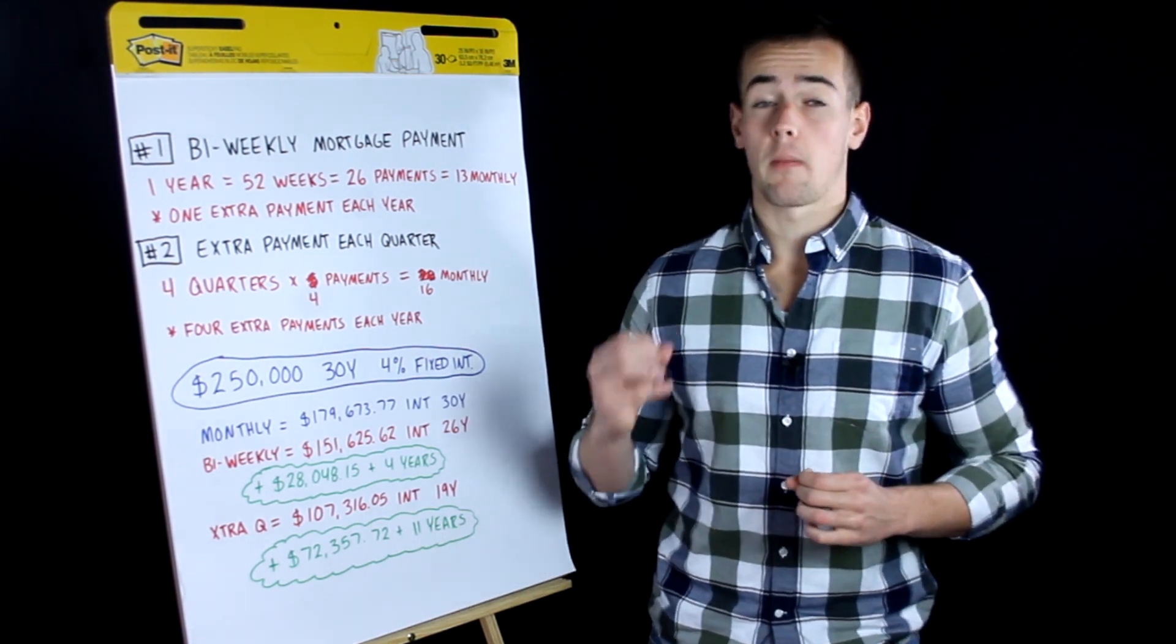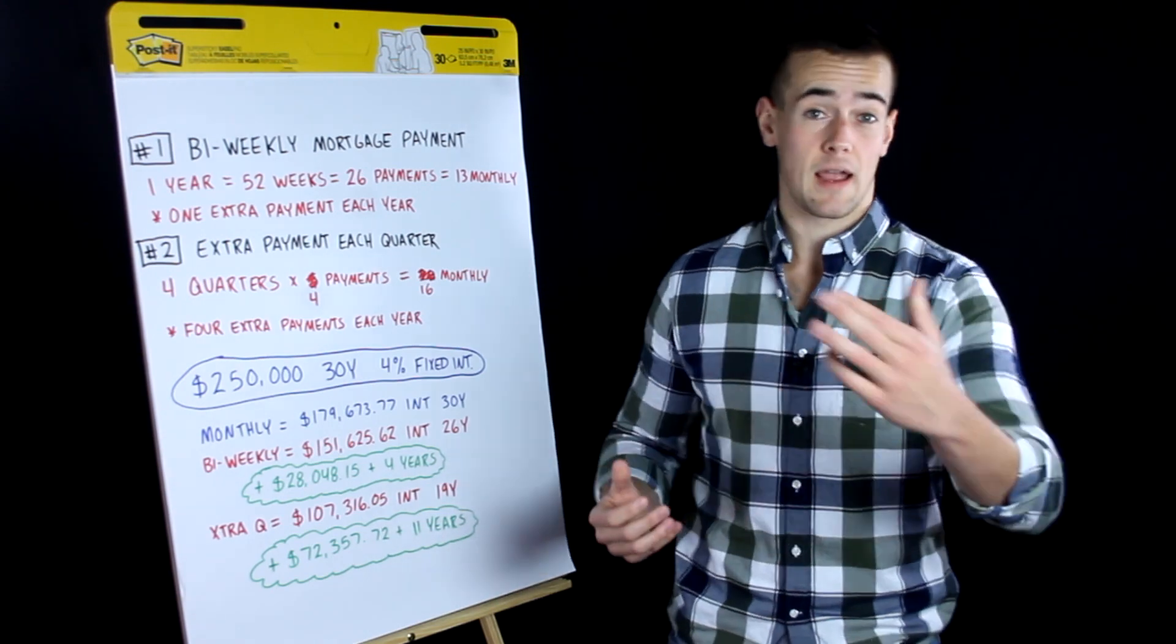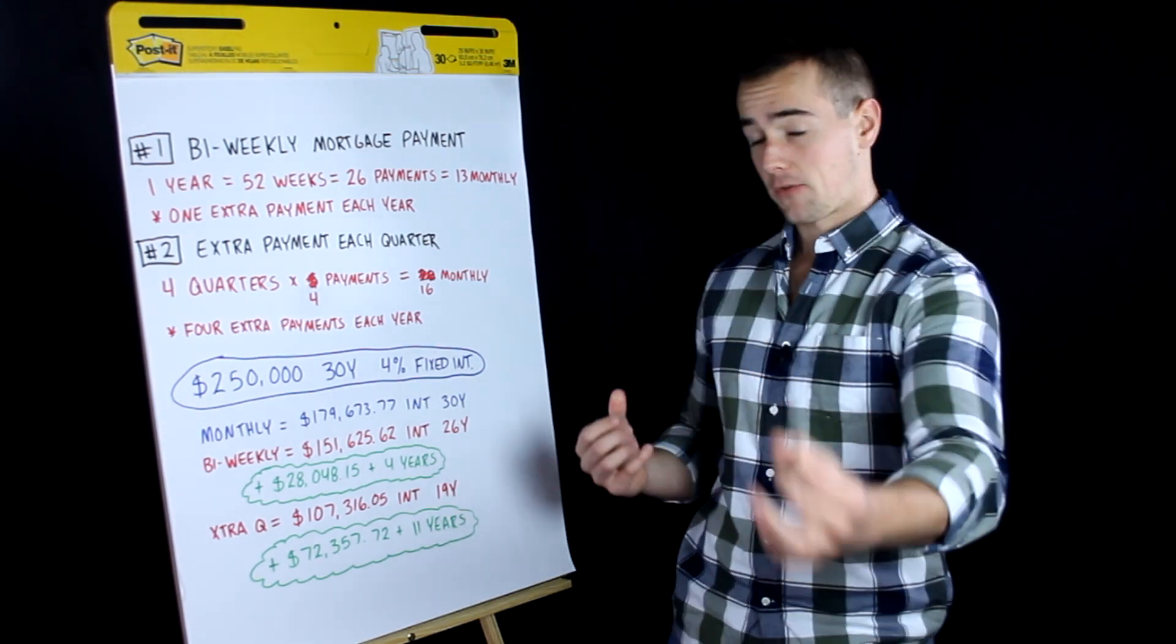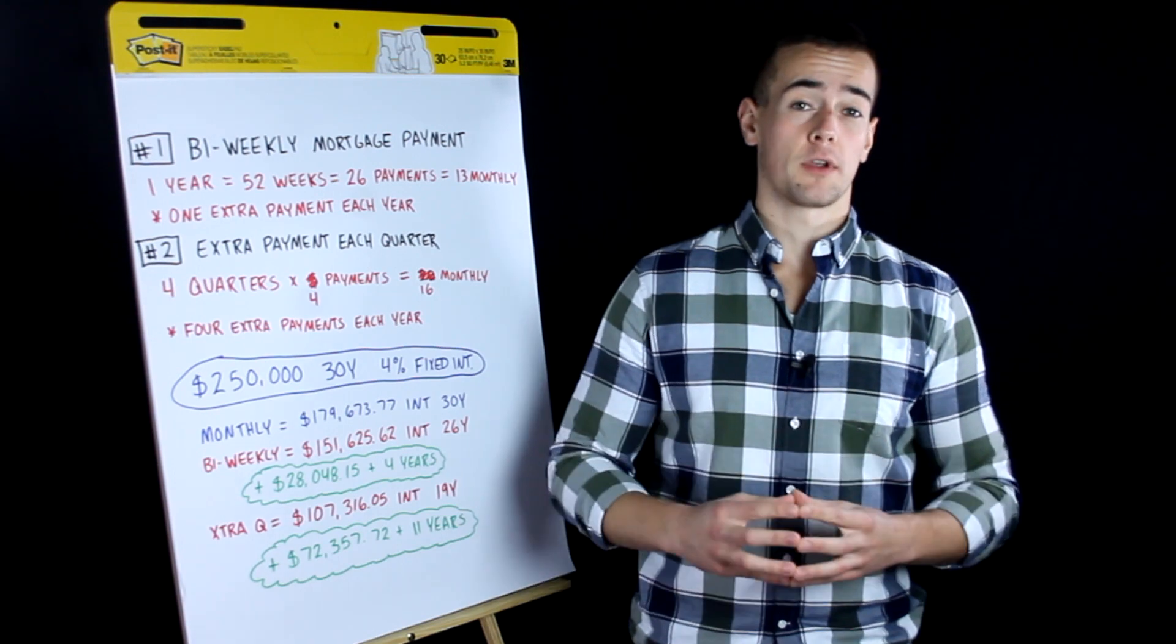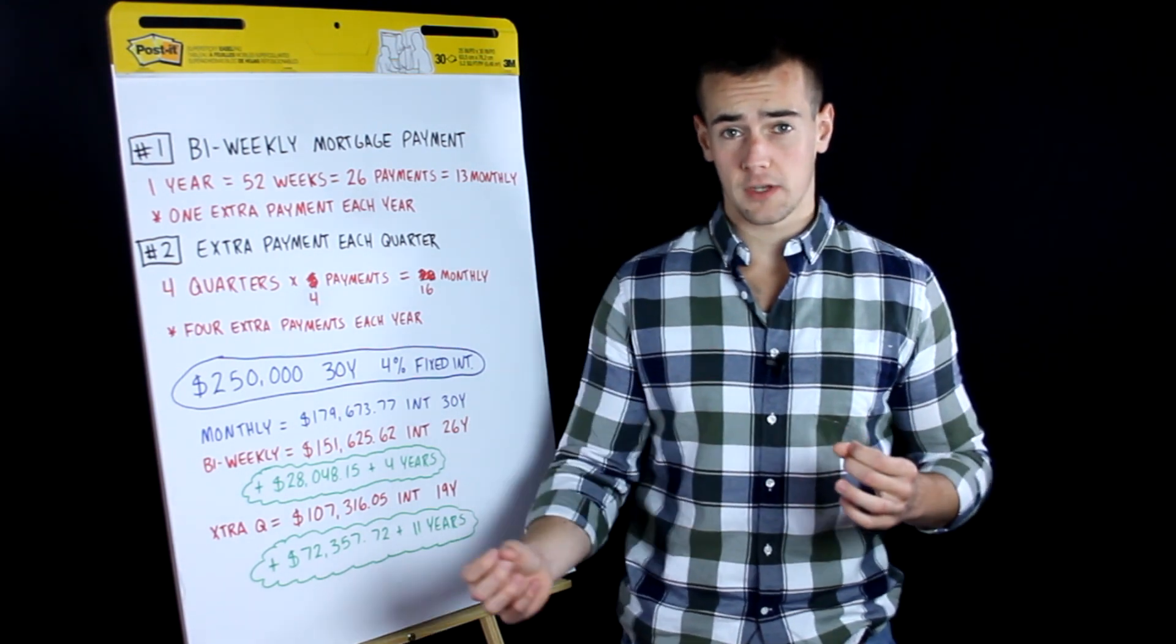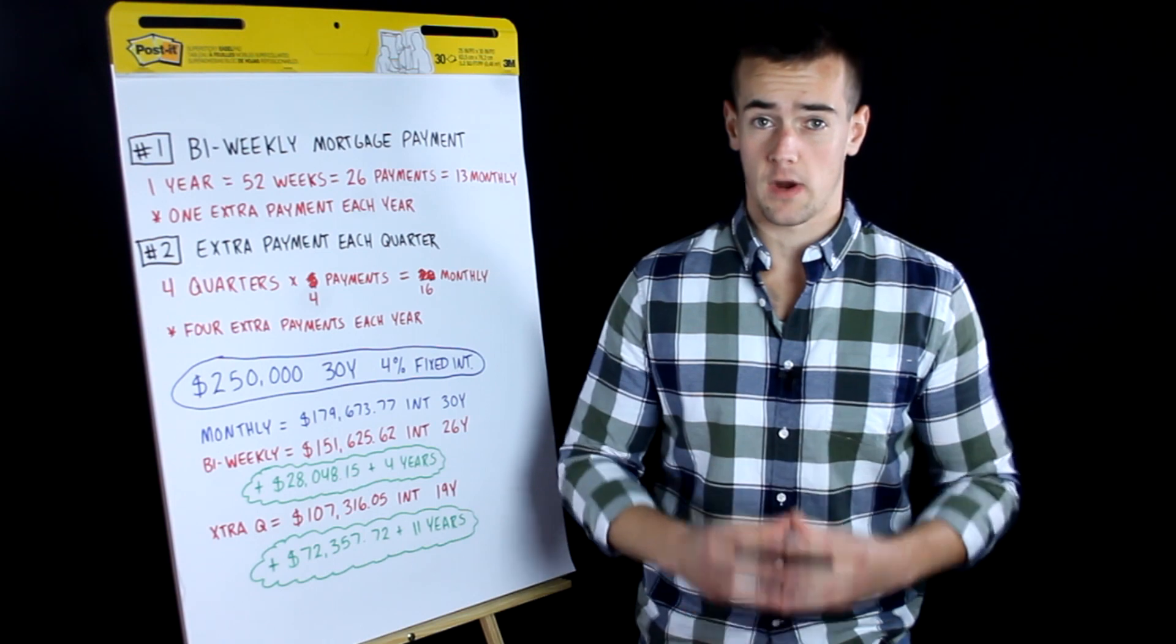So most people out there have a mortgage on their home. When you go out to buy a house, most people don't have enough money in cash to pay for that house, so they end up getting a mortgage. And the most common mortgage out there is a thirty-year term with a fixed interest rate.